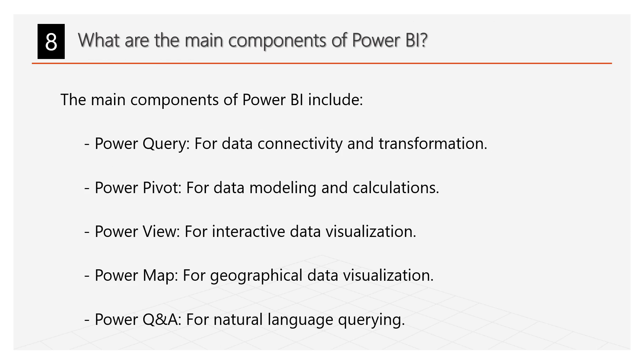What are the main components of Power BI? The main components of Power BI include Power Query used for data connectivity and transformation, Power Pivot used for data modeling and calculations, Power View used for interactive data visualization, Power Map used for geographical data visualization, and Power Q&A used for natural language querying.